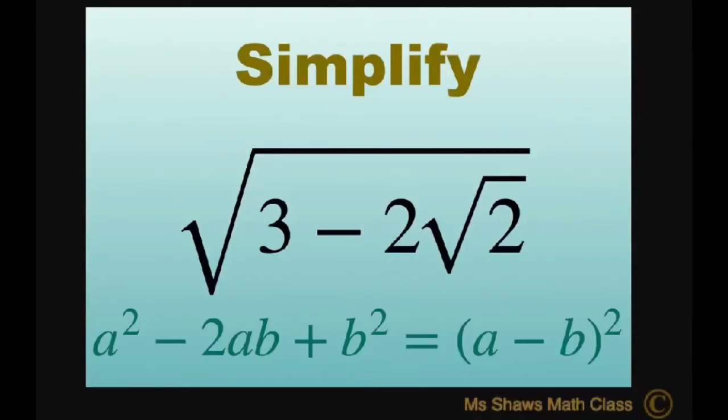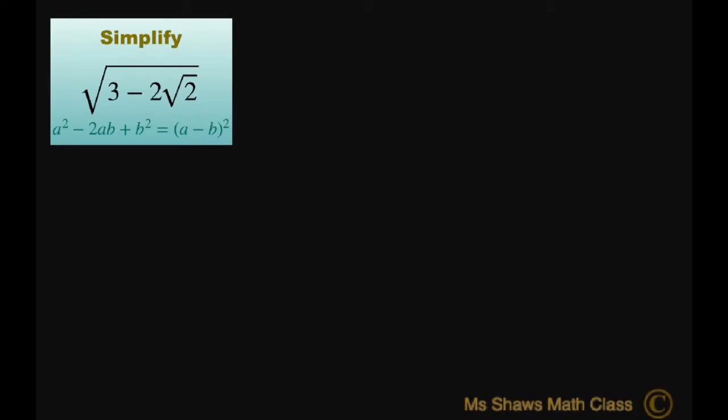Hi, everyone. We're going to simplify the square root of 3 minus 2 times the square root of 2. The reason we want to simplify this is sometimes it's easier to deal with this when we don't have so many radicals.